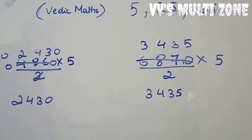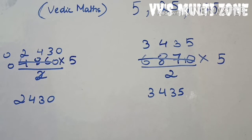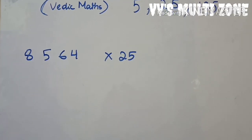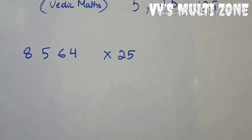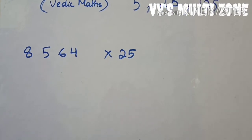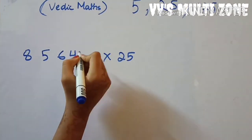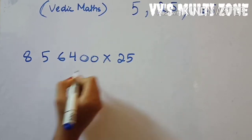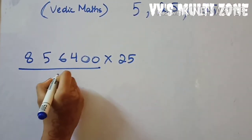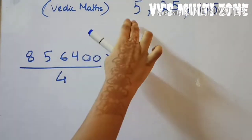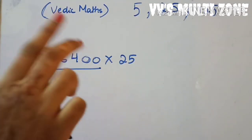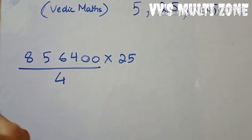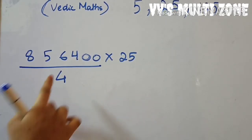Now we'll go to multiplication of 25. For the first question, the thing you have to do is add two zeros at your right-hand side and divide by four. For 5 you add one zero and divide by two; for 25 you add two zeros and divide by four.